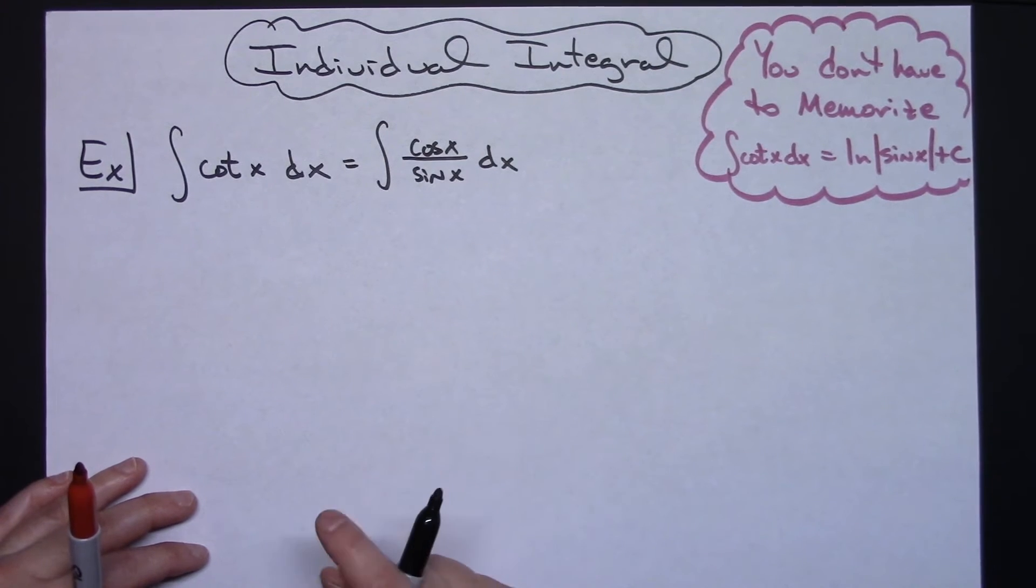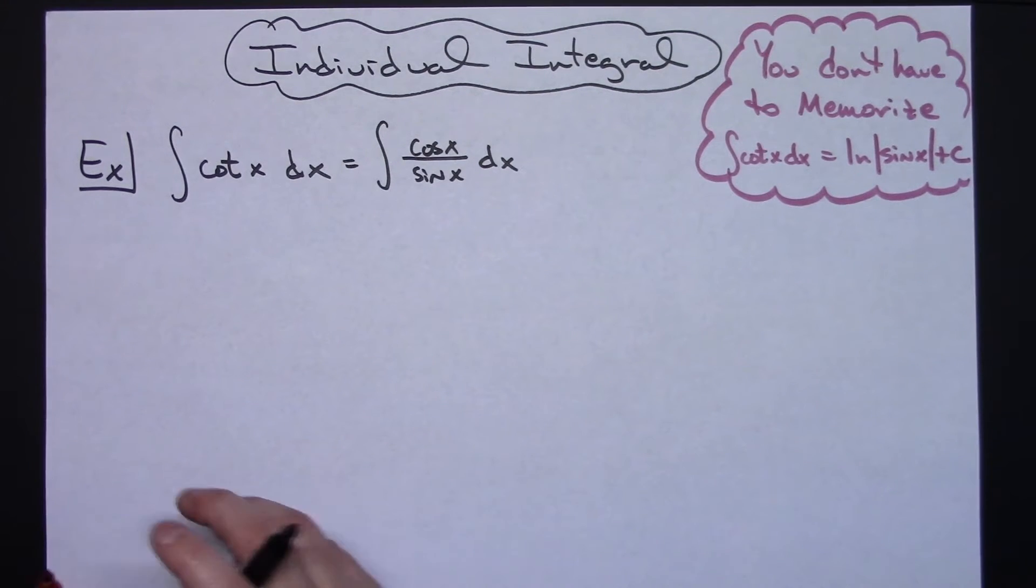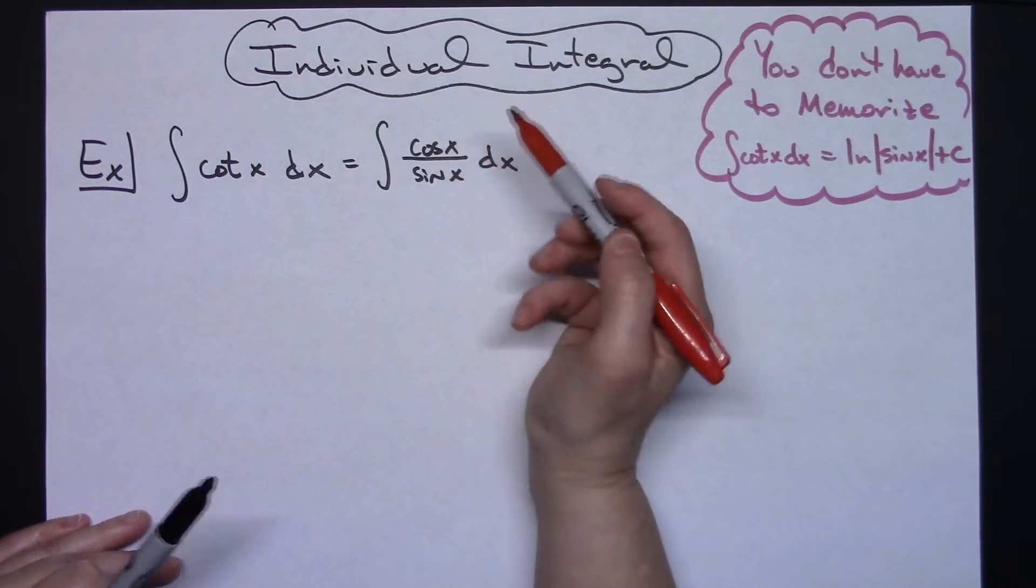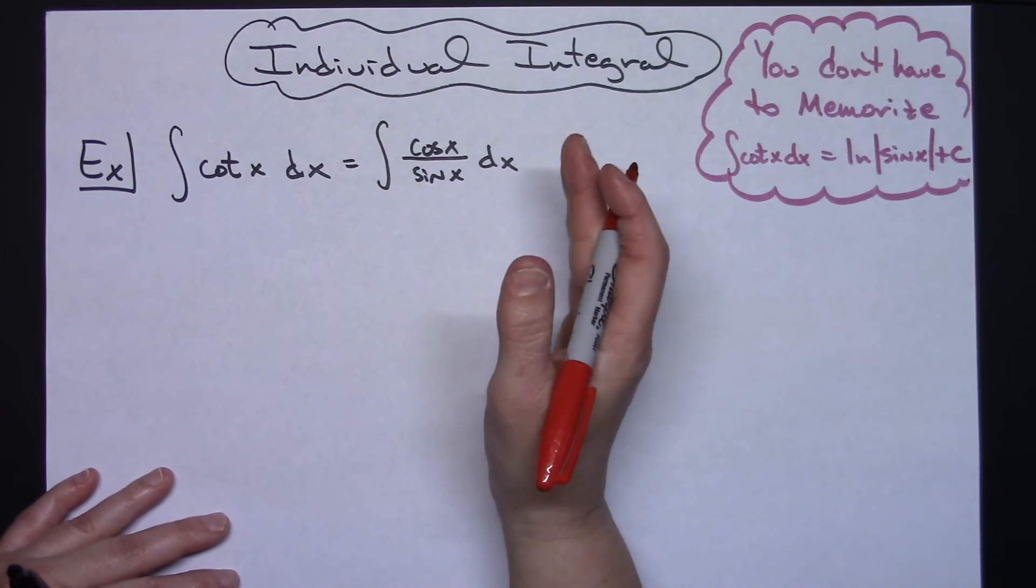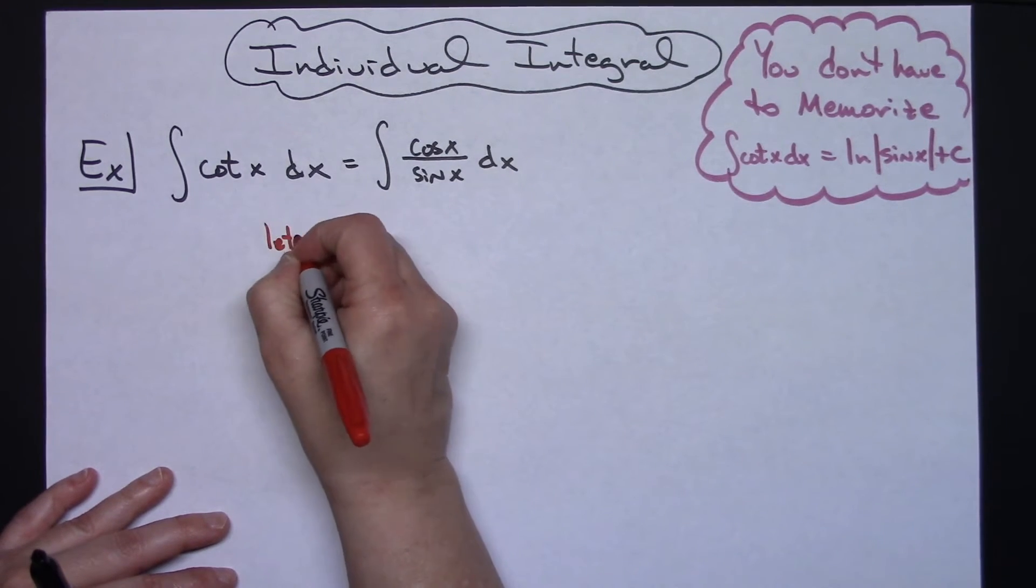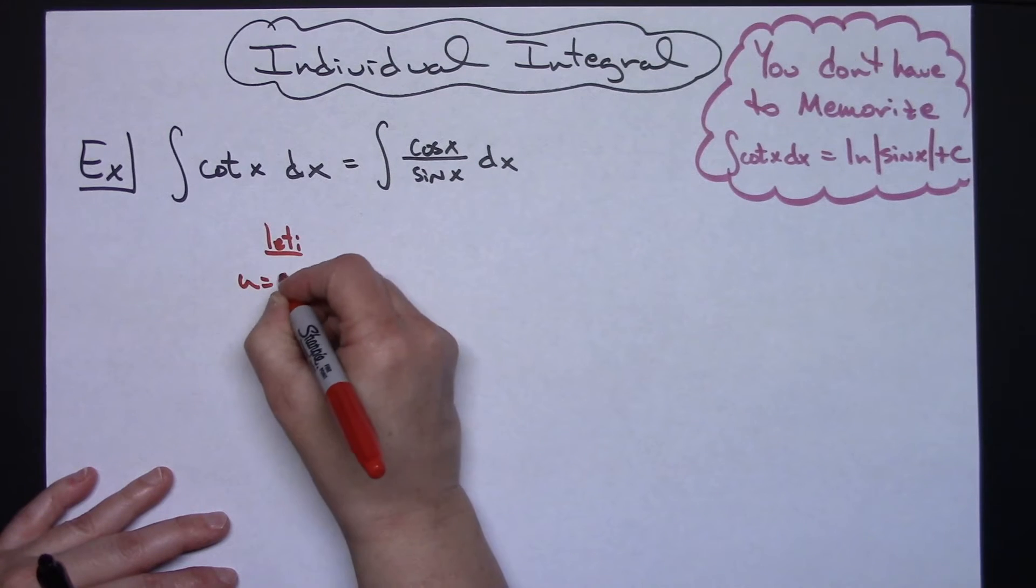Now, from there, I can do a nice little u substitution. And really, you could let either one, u be sine or cosine. It's going to work out a whole lot nicer if we let u be that sine x. So I'm going to let u equal sine x.